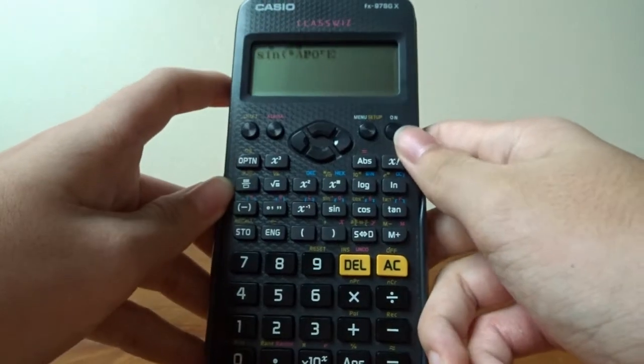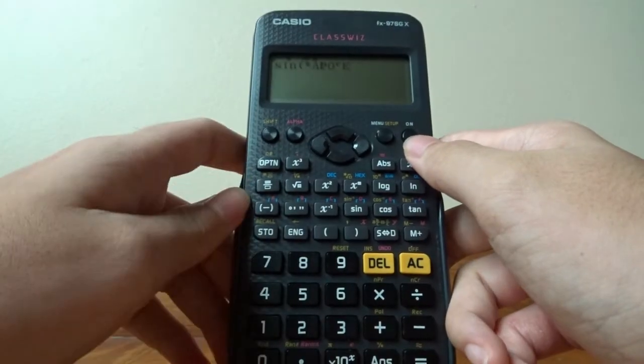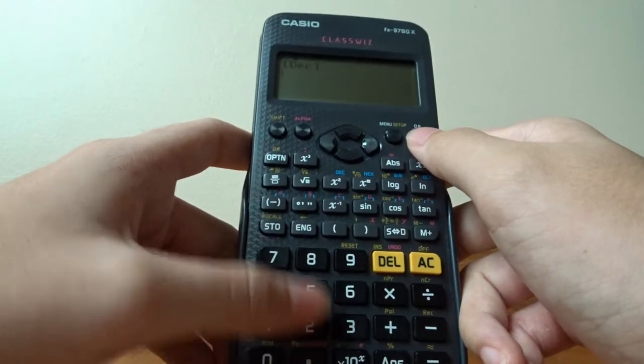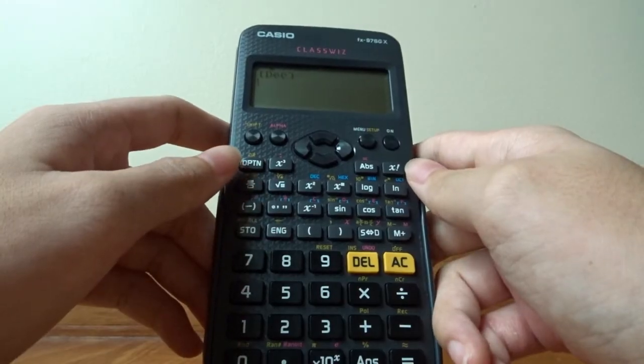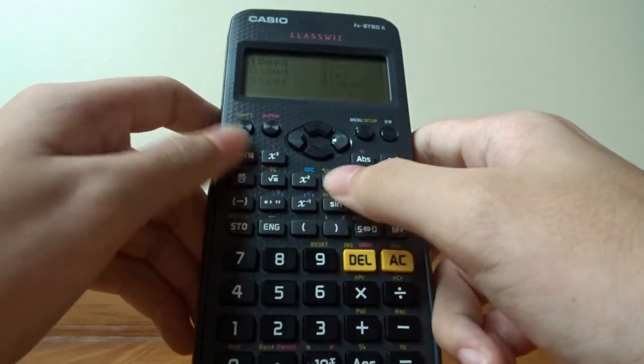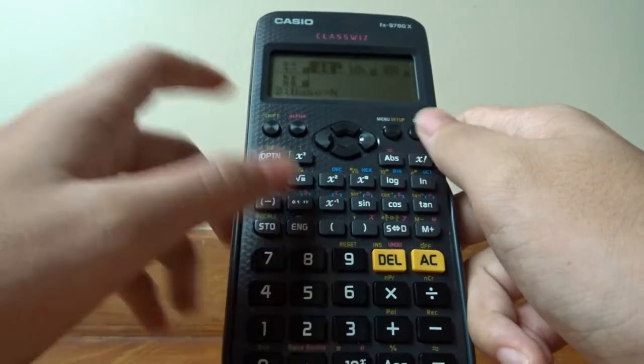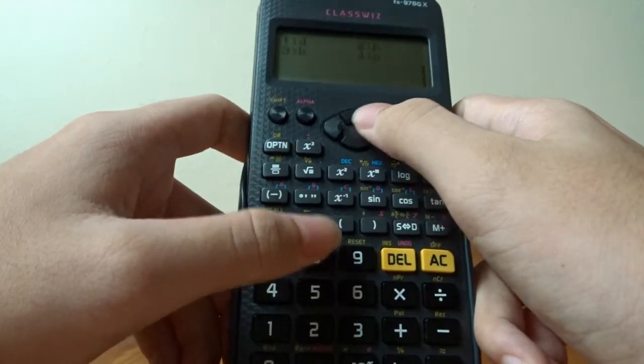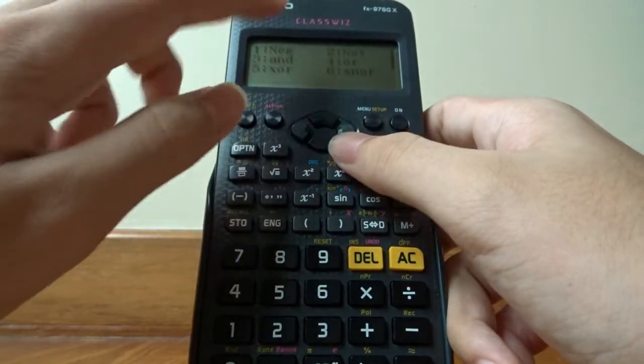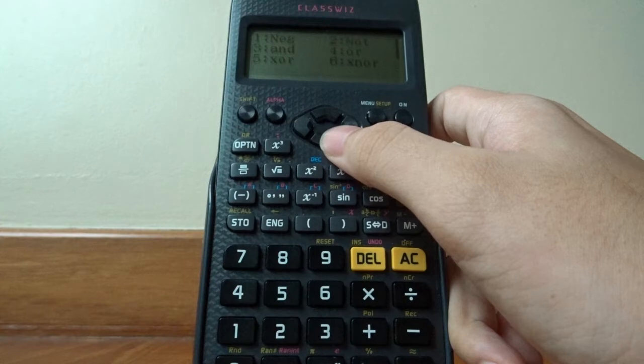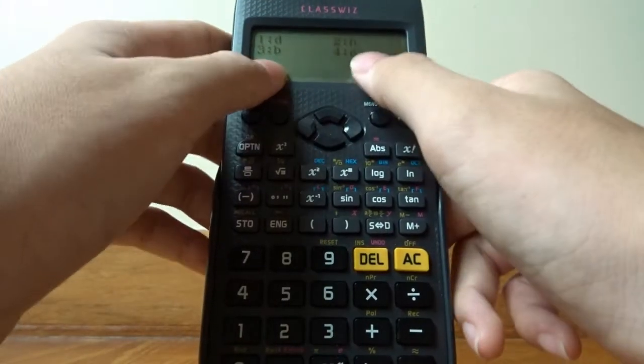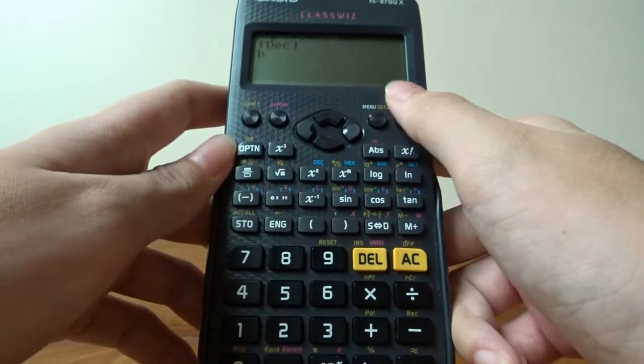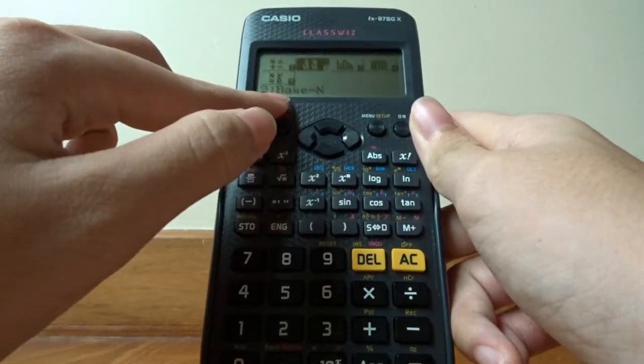Actually, there are other modes you can go into with other letters. For example, if you press setup and you have this menu, you press 2, then you press option, you will have this menu. And when you scroll down by pressing the down arrow, you have D, B, H, and O. So those can be typed, but this is in the base N setting.